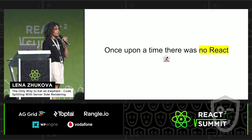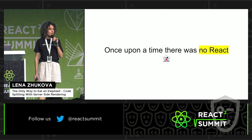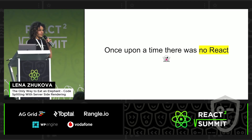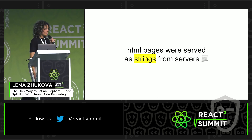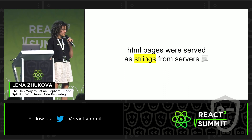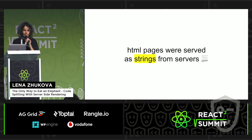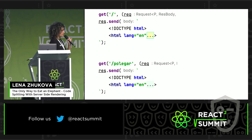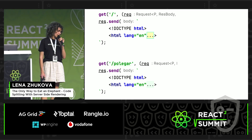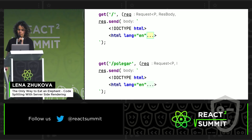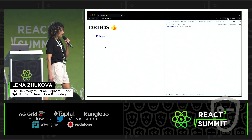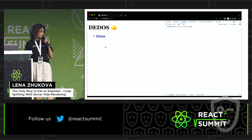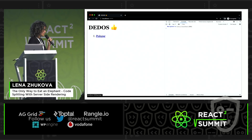It all started at the time when there was no React. Someone remembers these times, and someone can't even believe there was such a time. Back then, all HTML pages were served as strings. The whole content was a string served from servers. It looked something like this — one route for a whole HTML content, and there were many of them, as many routes as you have. And everybody was happy at that time. It was pretty straightforward, actually.